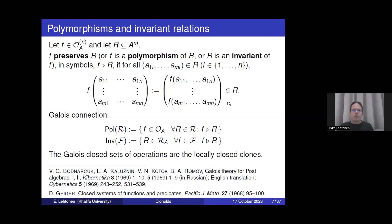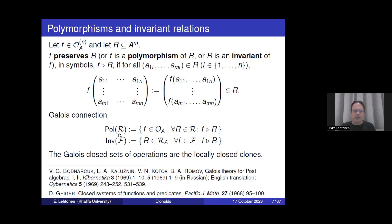This preservation relation induces a Galois connection between functions and relations. We have the polymorphisms of a set of relations, or the invariants of a set of functions. It is well known that the closed sets of functions under this Galois connection are precisely the locally closed clones.